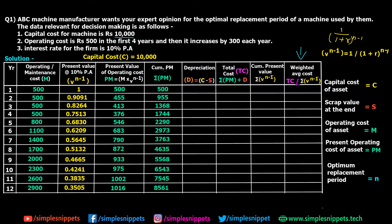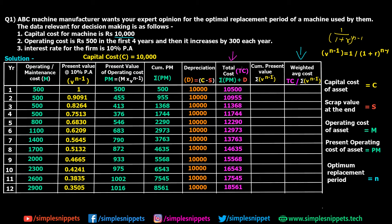Now depreciation: it equals capital cost minus scrap value. Since there is no scrap value, depreciation is constant at 10,000 for all years. Total cost TC = cumulative PM + depreciation. So year 1: 500 + 10,000 = 10,500; year 2: 955 + 10,000 = 10,955; and so on. I've now calculated the total cost column.